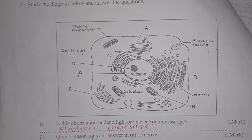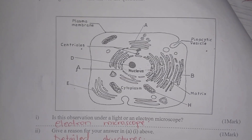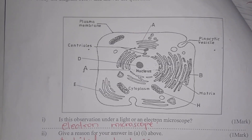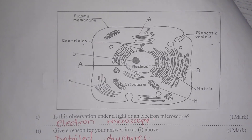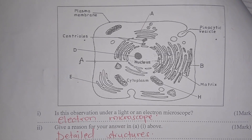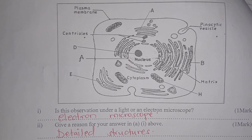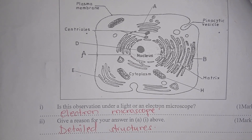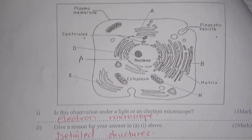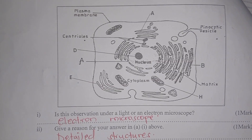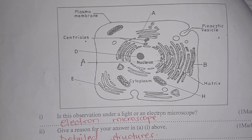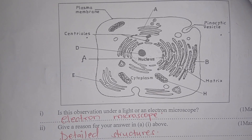Study the diagram below and answer the questions that follow. A cell is being displayed and you are asked: is this observation under a light or an electron microscope? It is under an electron microscope because it is showing us the details of the cell organelles.